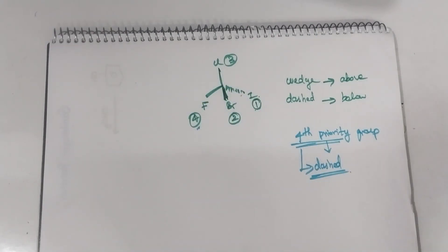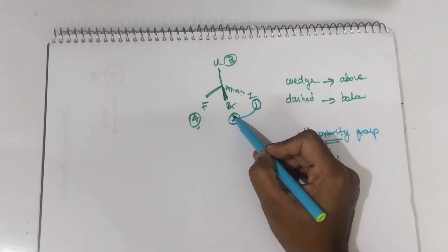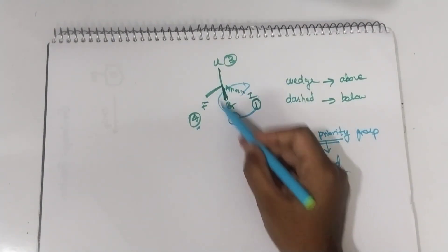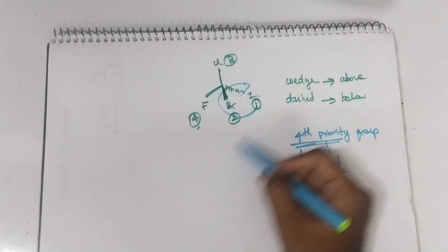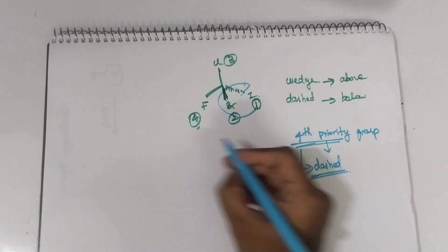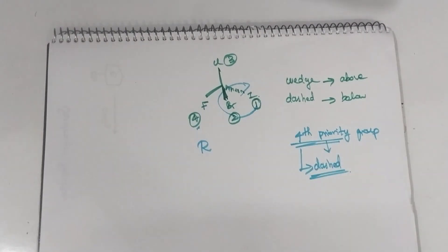First of all, after giving the priorities, what you have to do is rotate and trace from 1, 2, 3. It is in the clockwise direction — towards your right — hence it is clockwise direction. Clockwise direction means it is R configuration.